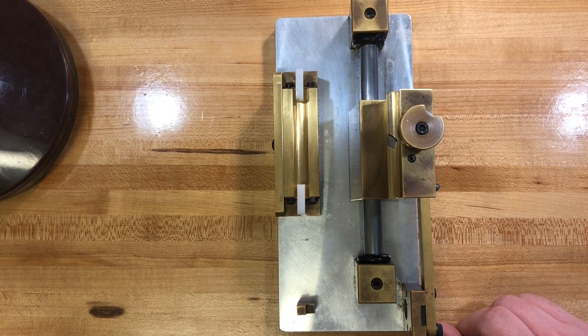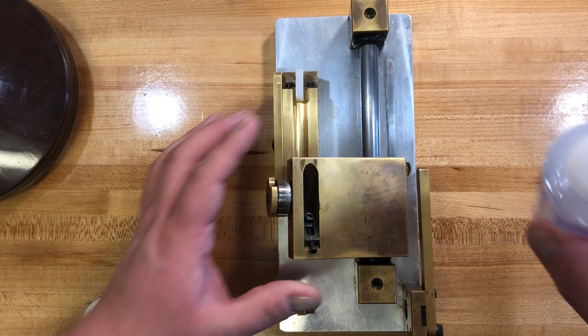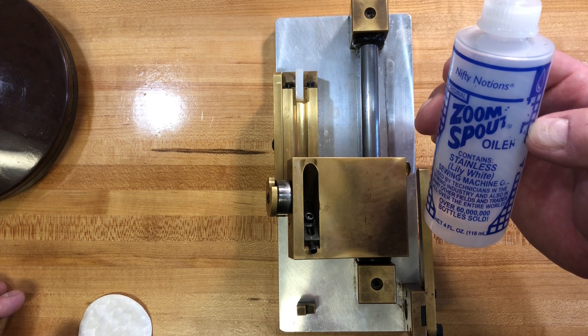So before I put it away, I want to oil a couple of things. One is this rod that the carriage rides on. And for this I use lily white sewing machine oil. Dan Ross recommended I use this. It's very thin. It doesn't stain anything.